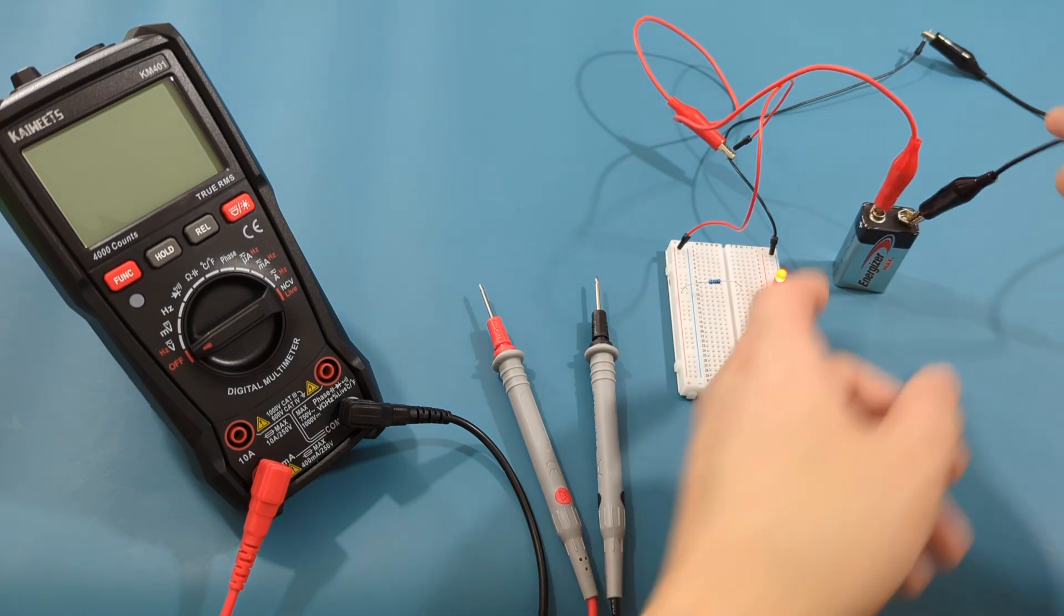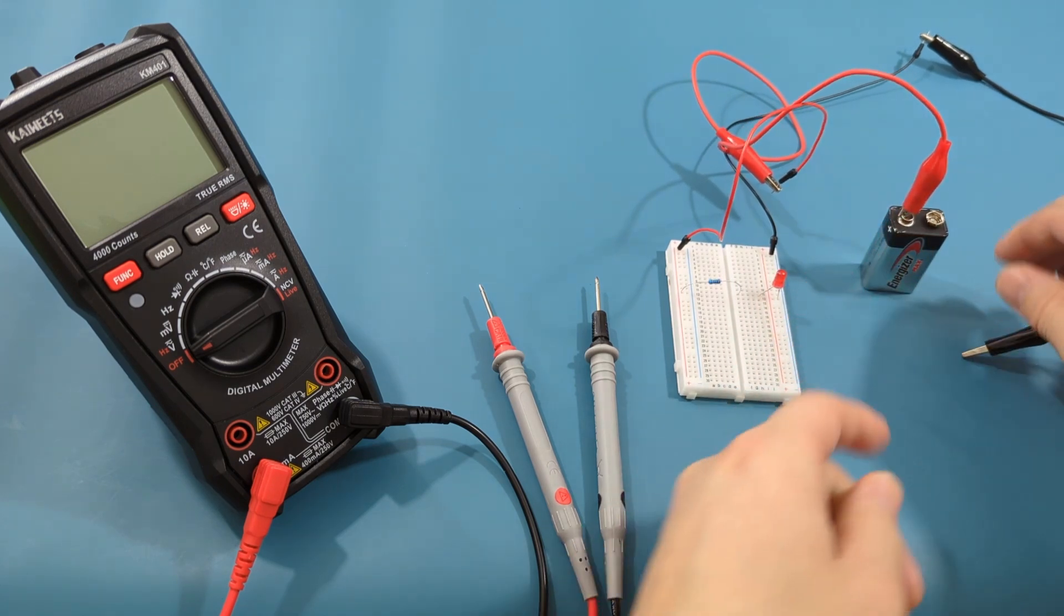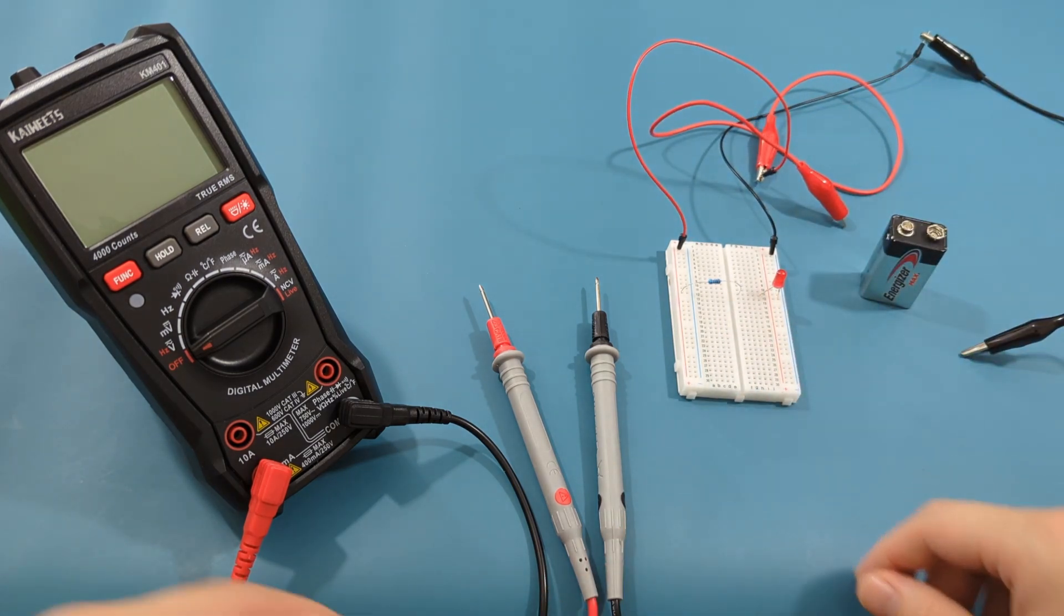To test the current, we need to have the multimeter in series with a circuit. This means we need to rearrange the circuit so it's in an open loop, and we can use the multimeter to close it.